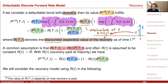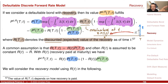You see that if recovery is zero, this is just the defaultable bond. If recovery equals one, you just have the non-defaultable bond because you receive exactly one unit at maturity. We will use this model — this last line — to model defaultable bonds that pay a recovery at maturity. Often R is just a constant, even simpler.